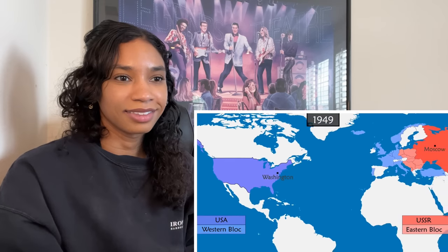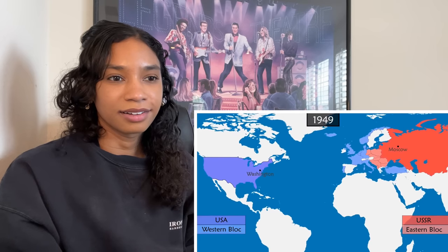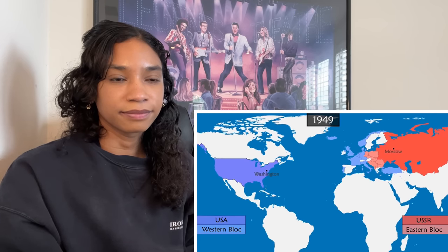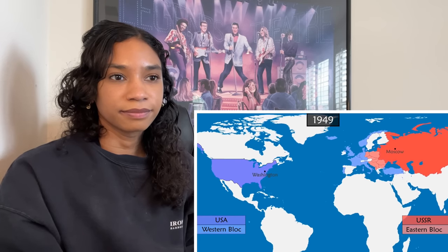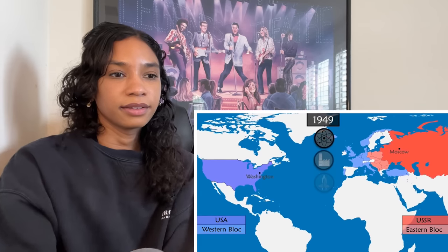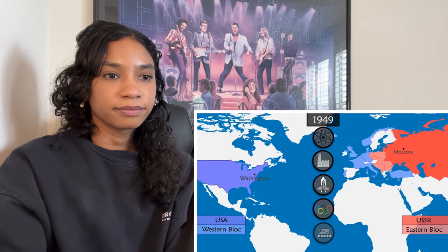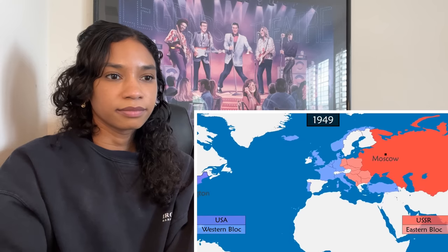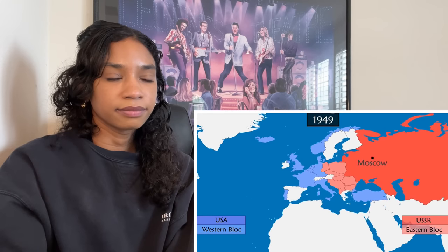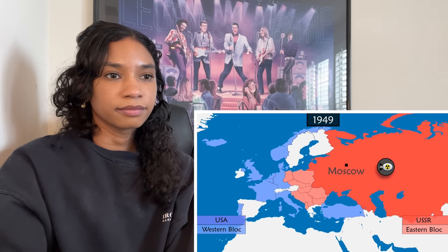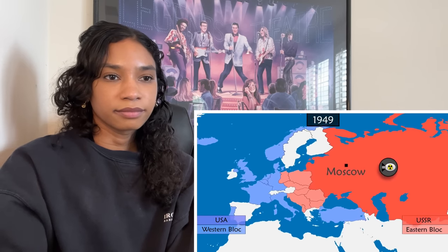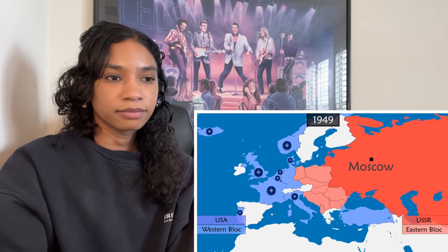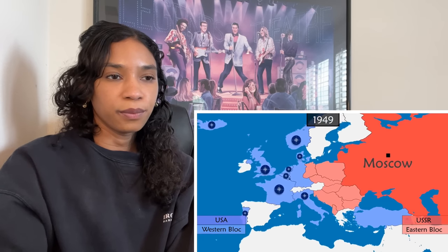In the USSR, any form of opposition is suppressed. Beyond ideology and clout, the two powers battle for influence in the fields of science, industry, space, sports, and military. The Soviet Union invests heavily in industry and arms and in 1949 tests its first atomic bomb. The same year, the United States sets up NATO, a military alliance between countries of the Western Bloc.